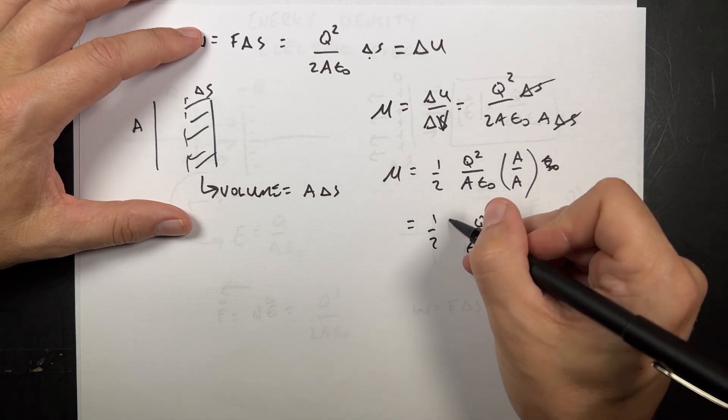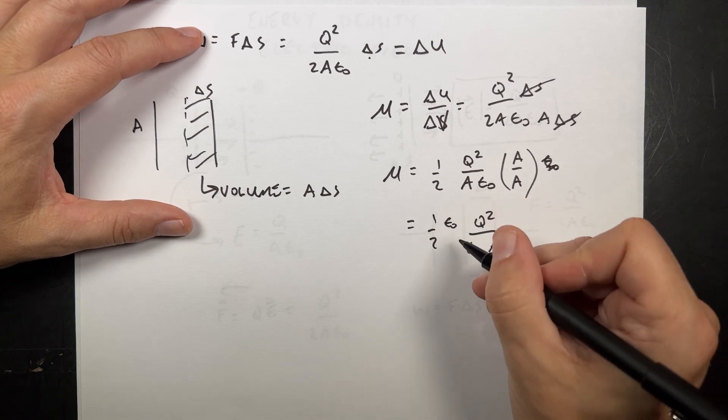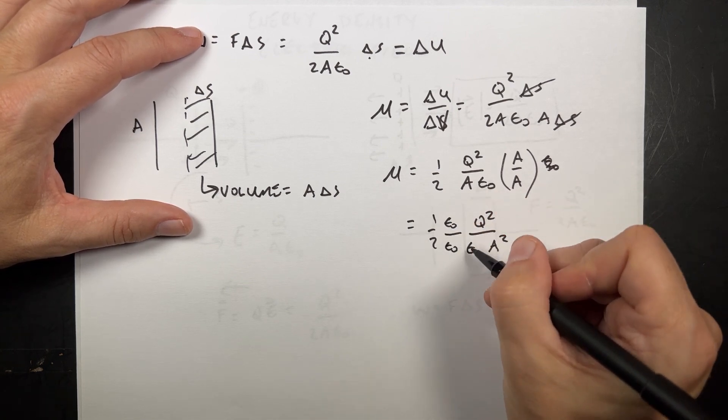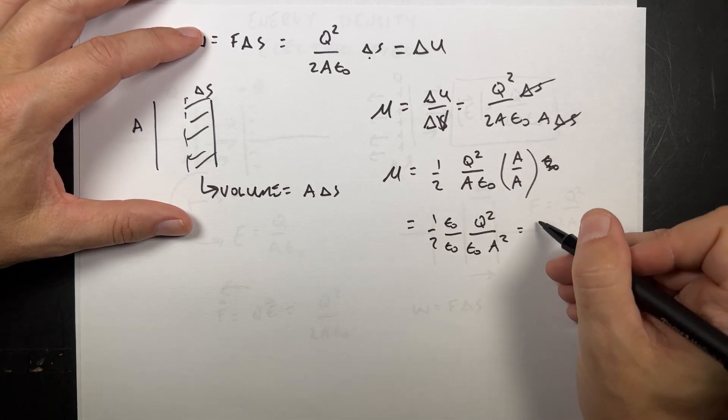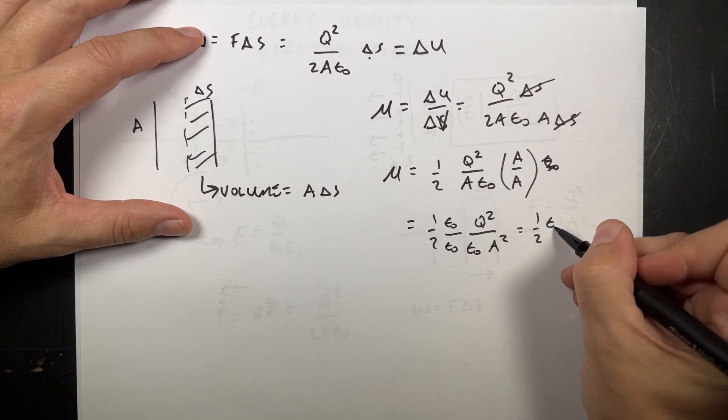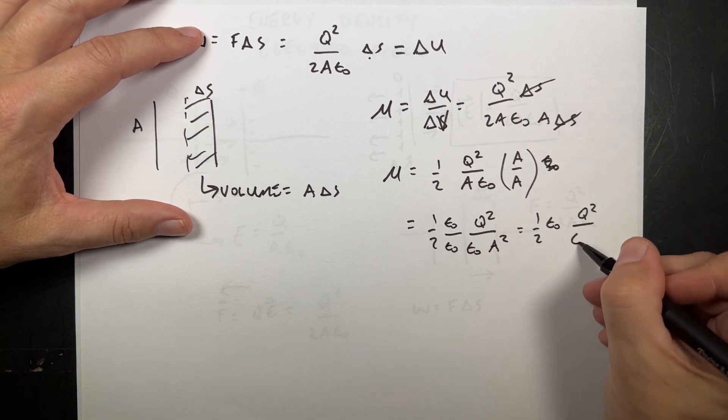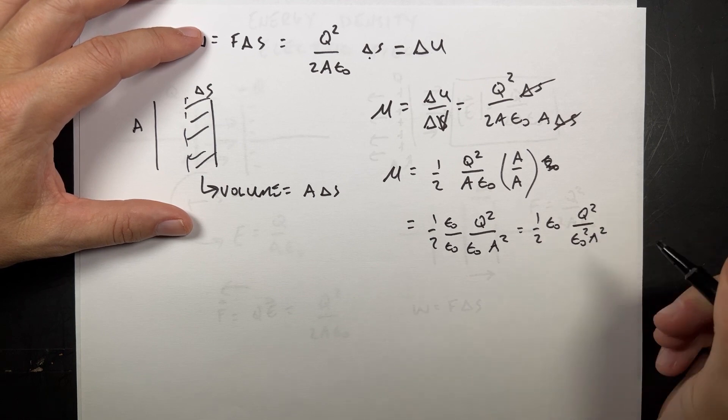So let's multiply that by epsilon naught and divide by epsilon naught. That's right. And then this will be equal to one half epsilon naught Q squared over epsilon naught squared A squared.